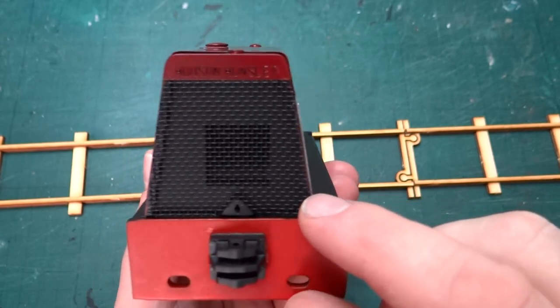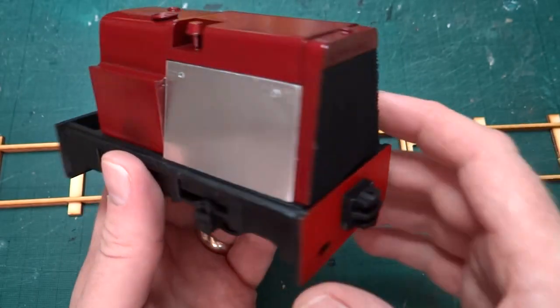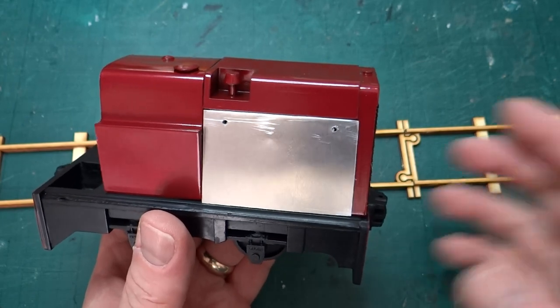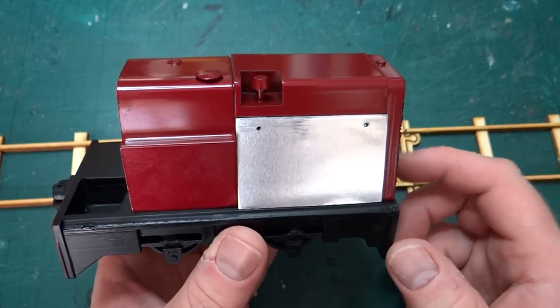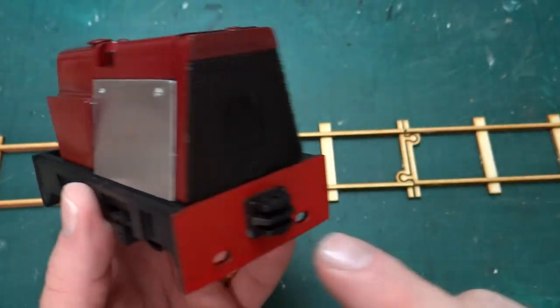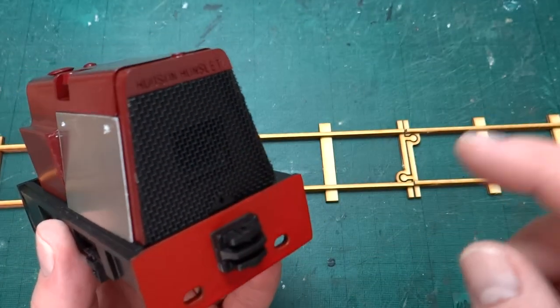If I pick it up we can have a better look at it. We've got the grille on the front which I'll come back and talk about in a minute. Obviously the body's on the chassis, just kind of clipped into place then glued in.